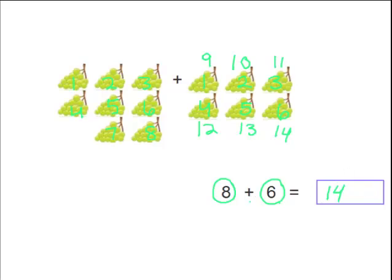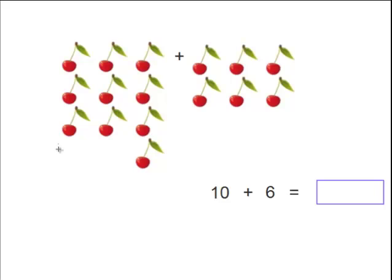And one more. We have a lot of cherries and the problem 10 plus 6. So again let's count these out. We have 1, 2, 3, 4, 5, 6, 7, 8, 9, 10.